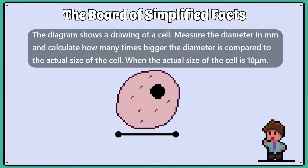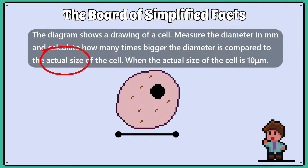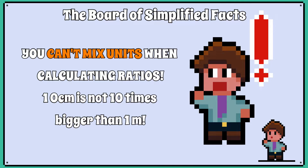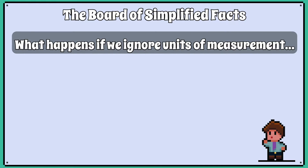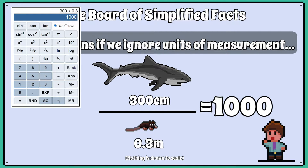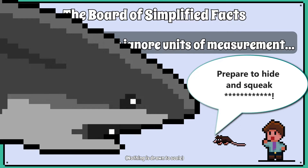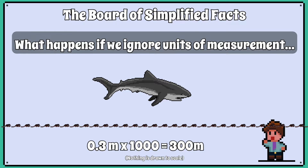Here we have a picture of a cell and the question asks us to measure the diameter, then calculate how much bigger the drawing is compared to the actual size of the cell. Before we do anything with our ruler, I want to stress the importance of checking our units of measurement, because we can run into problems if we overlook them. For example, if a rat is 0.3 metres long and a shark is 300 centimetres long, we can't just say 300 centimetres divided by 0.3 metres, which equals 1,000 — because this would wrongly say the shark is 1,000 times longer than the rat. 1,000 rats lined up would overshoot the length of the shark by 297 metres.